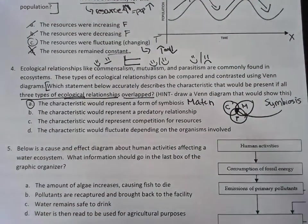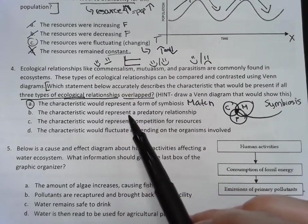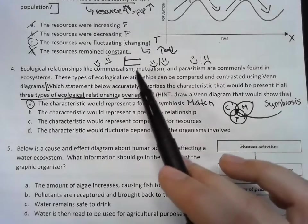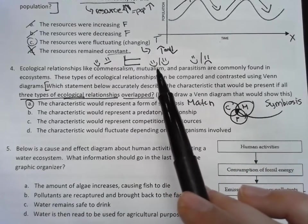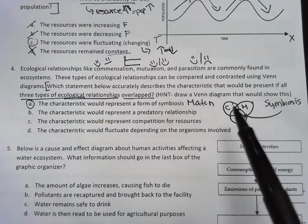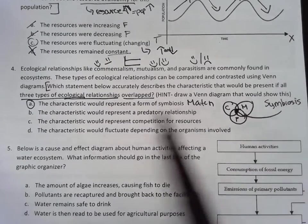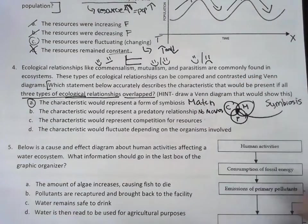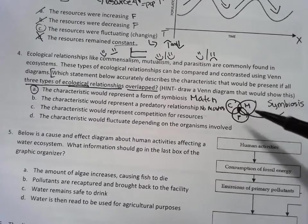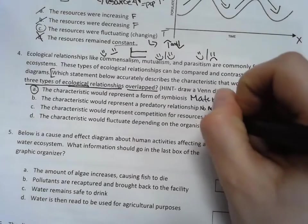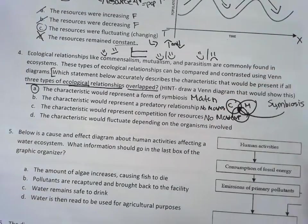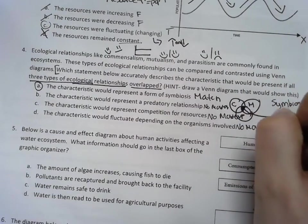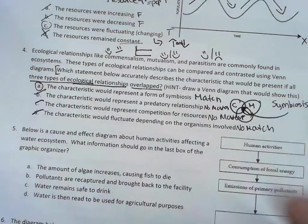So as I go through my answer choices, the characteristic would represent a form of symbiosis - well right away I know that's a match, so this is the right answer. The characteristic would represent a predatory relationship - well that doesn't really make any sense because one, that wasn't ever an ecological relationship that was said, and then why would everything overlapping result in something negative? The characteristic would represent competition for resources - there's nothing really in here about resources. And then the characteristic would fluctuate depending on the organisms involved - I have no information about that, I have no idea from what they gave me.